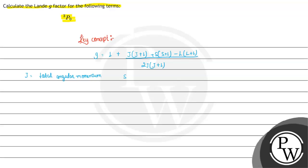s is spin angular momentum, l is orbital angular momentum.